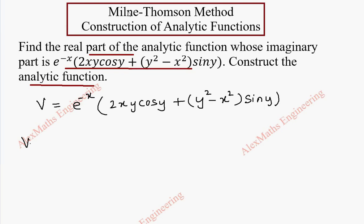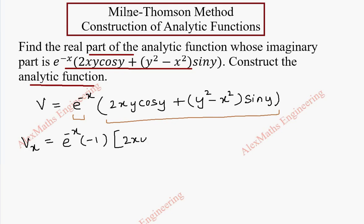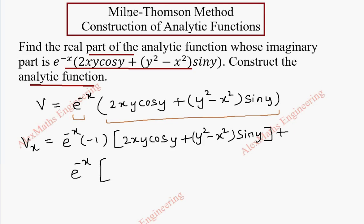Now we are going to find vx, which is the partial derivative of this with respect to x, and we are going to use the product rule. So the first term derivative is e^(-x) into minus 1, and the second term is fully kept as it is, which is 2xy·cosy plus y² minus x² into siny. Then plus, keeping the first term as it is, the second term derivative.